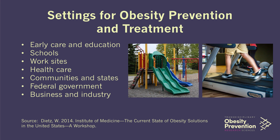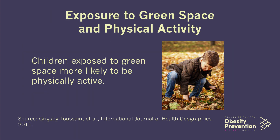What are some settings for obesity prevention and treatment? Early care and education — for example, working in child care facilities, ensuring that they have good policies with respect to healthy eating; working through school lunch programs; workplace programs that encourage healthy eating and exercising. Some of the work that I have done has looked at the importance of green space, access to green space, and how that potentially influences physical activity. We found that kids who had more access to green space were more likely to engage in physical activity and be more physically active. This is one example of a policy recommendation: if we can increase access to green space, we can increase levels of physical activity and hopefully long-term reduce the risk of becoming obese.